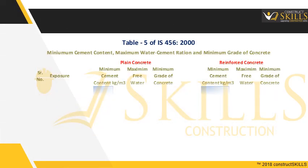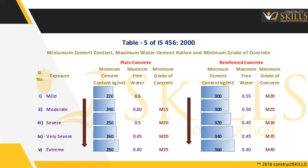The water cement ratio should always be kept at the lowest value. Different cement types, aggregate grading, and aggregate shapes produce concretes of different compressive strength for the same free water cement ratio. Therefore, the relationship between strength and free water cement ratio should preferably be established for the materials to be used. In the absence of such data, use the water cement ratios as per Table 5 of Indian Standards specifications. The minimum cement content and maximum water cement ratio apply to 20 mm nominal maximum size aggregate.